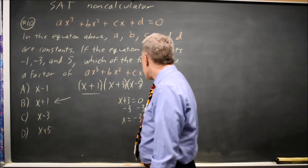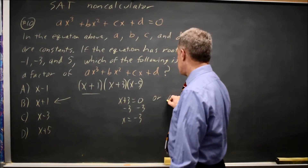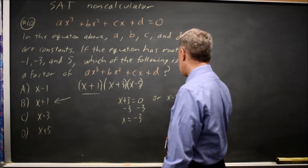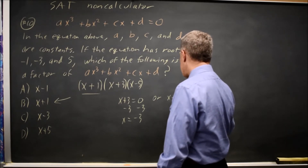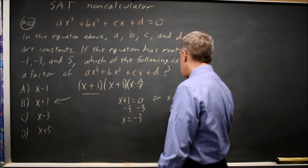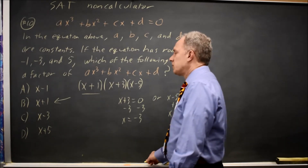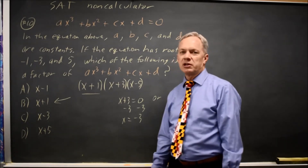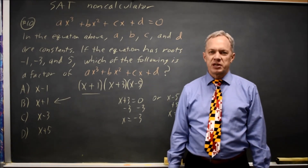And similarly with x minus 5 equals 0, if I add 5 to both sides, I get x equals positive 5. You should be able to go either direction. Come back soon for my next math video.